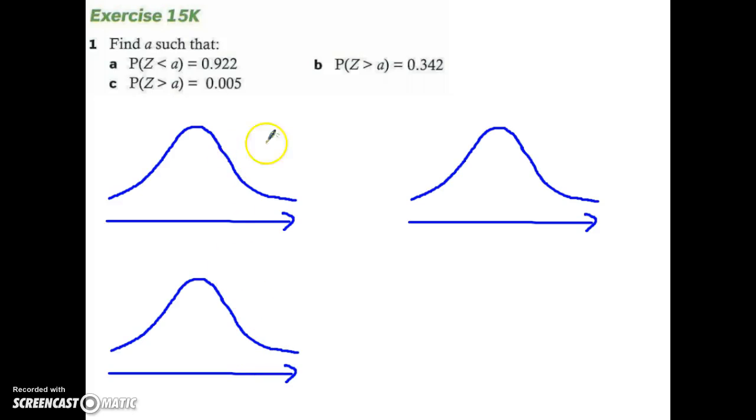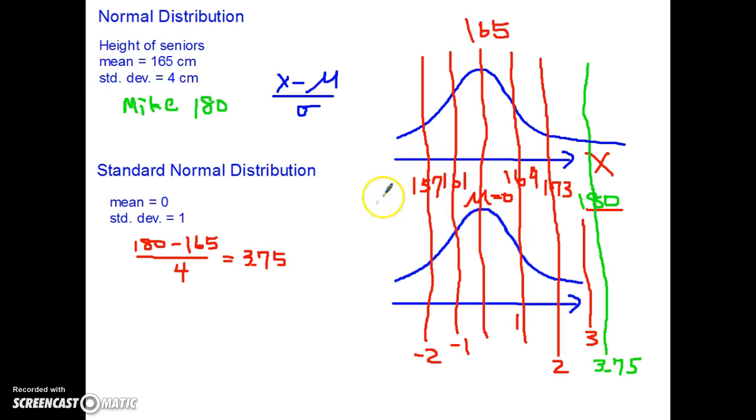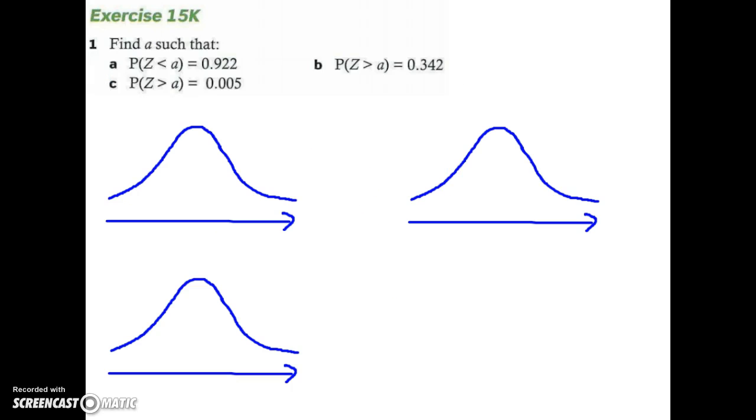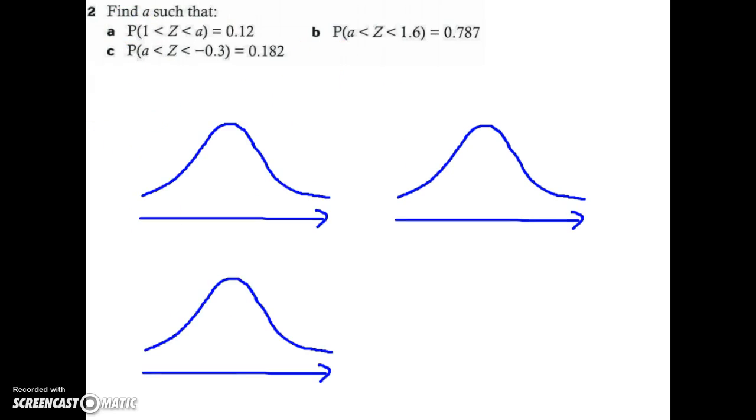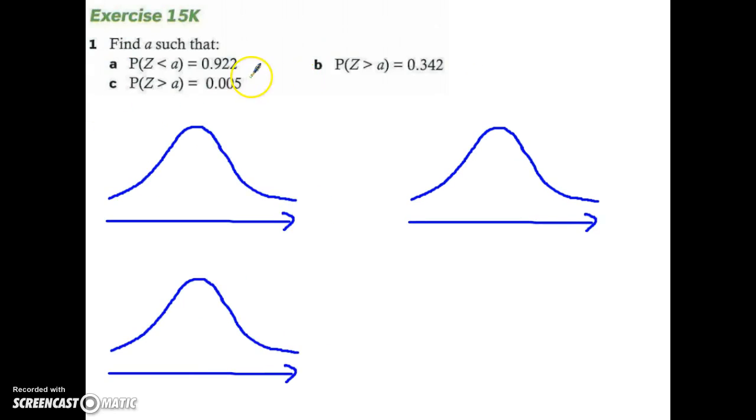Hi everyone, in the previous video I explained to you guys the relationship between a normal distribution curve and the standard normal distribution. Hope you guys understood the difference and similarities between them. Now let's take a look at some examples. Here I have screenshot the exercise 15K, and I'm going to go over question number 1, and if I have time, I'll go over question number 2 as well.